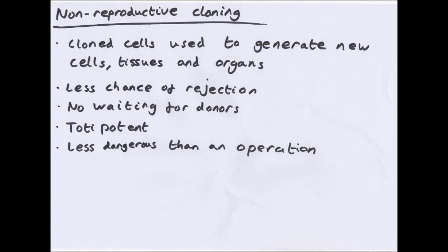For example, before a baby is even born, you could remove its stem cells and keep them. If that child grows up and has kidney failure and both kidneys die, you can create kidneys from its own stem cells. When put back in, they won't be rejected because they have the same genetic code as the original organism — it'll see them as itself. You also won't have to wait for donors or go on dialysis — you just need your stored stem cells to have new kidneys made.